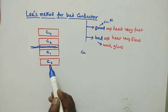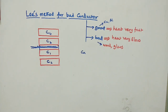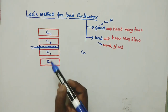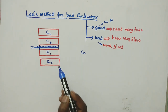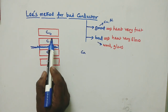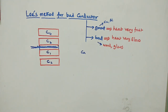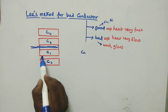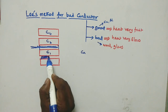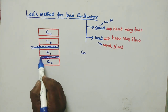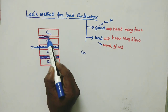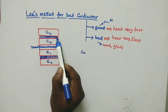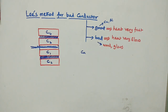We need two bad conductor specimens: one inserted between disc C1 and C2, and another inserted between disc C3 and C4. Once inserted, the experimental setup is ready.